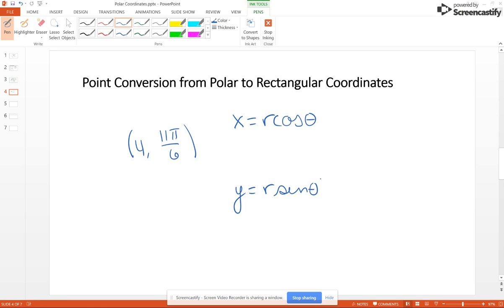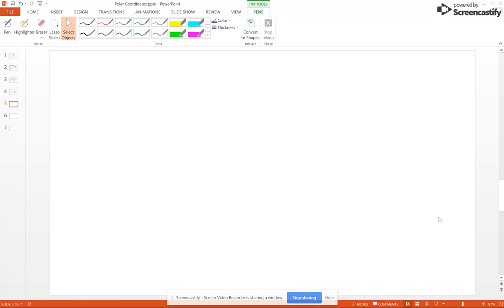And then here 4 sine of 11π over 6 is 4 times negative 1 half, which of course is negative 2.